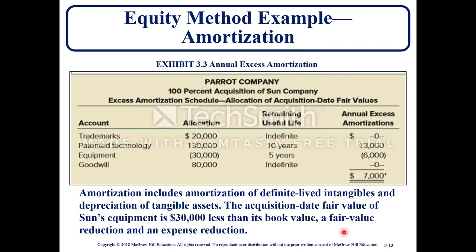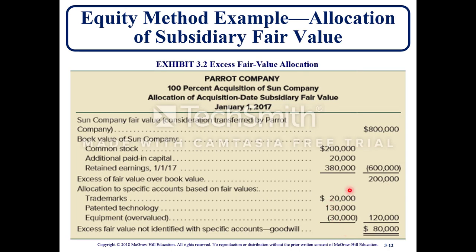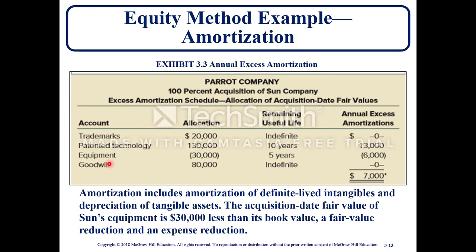This was as of the acquisition date. For the equity method example for amortization: the items identified as the additional $120,000 are shown in the excess amortization schedule — allocations of $20,000 and $130,000 over valuation and Goodwill, with remaining useful life and annual excess amortization totaling $7,000. Amortization includes amortization of definite-lived intangibles and depreciation of tangible assets. The acquisition date fair value of Sun's equipment is $30,000 less than its book value — a fair value reduction and an expense reduction.